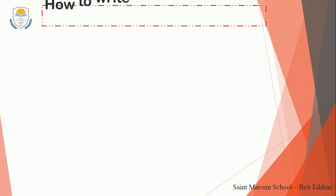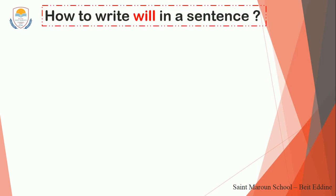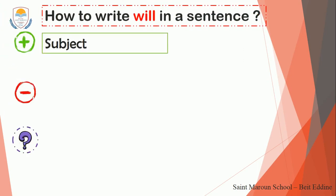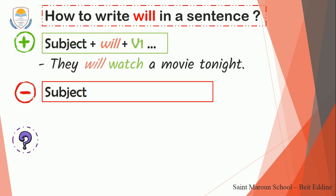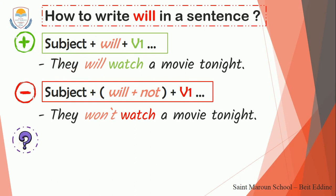How to write 'will' in a sentence? It also has three forms. The positive form is: subject, then 'will', then verb one. For example: 'They will watch a movie tonight.' The negative form is: subject, then 'will' plus 'not', then verb one — 'not' sticks with 'will'. For example: 'They won't watch a movie tonight.'